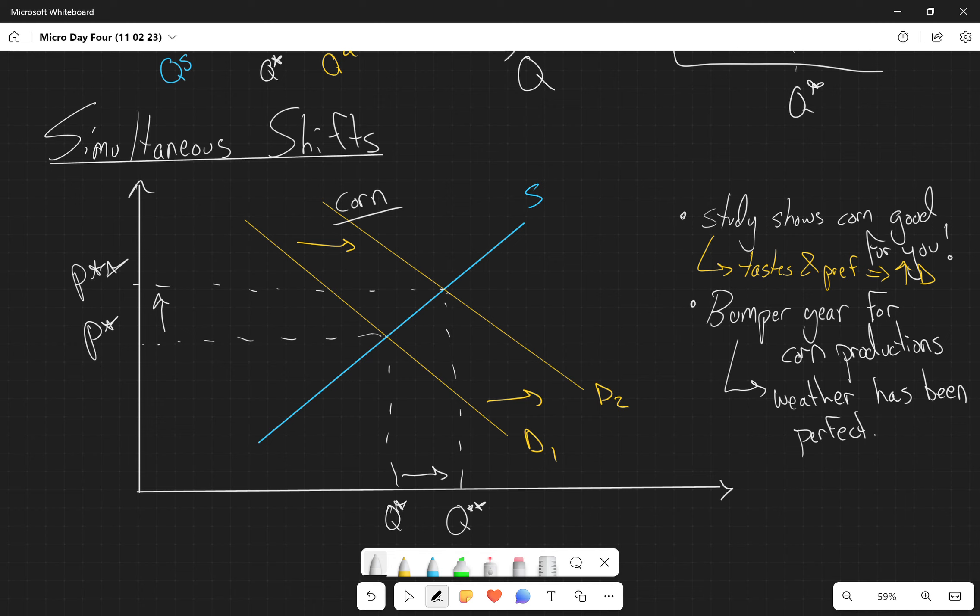Similar with snow sports, mountains and stuff like that. Natural conditions impact the amount of lift passes that they can provide any given year. Similarly, natural conditions obviously affect agriculture. So bumper year, weather's been perfect, that means this is a natural conditions determinant, and this is going to cause my supply curve to shift up, or the other way to think of that is my supply curve to shift to the right.